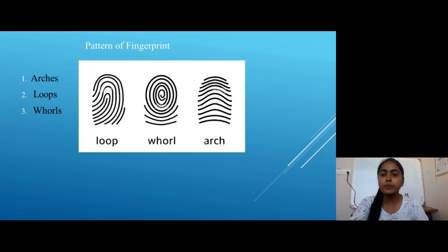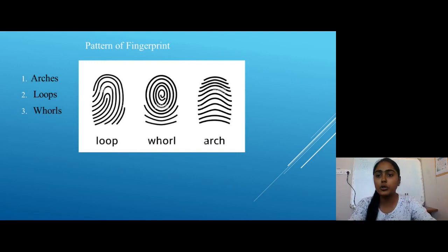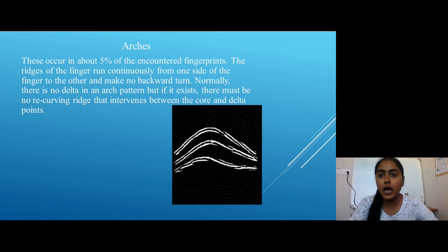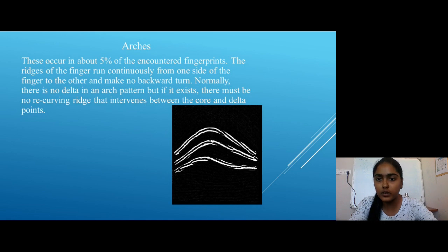There are three main types of fingerprint patterns. First is Arches, Loops, and Whorls. We will talk about Arches first. They occur in about 5% of the encountered fingerprints. The ridges of the finger run continuously from one side of the finger to the other and make no backward turn.